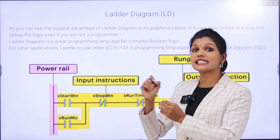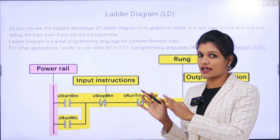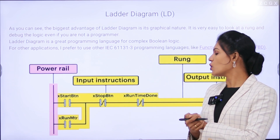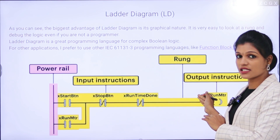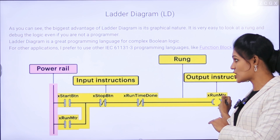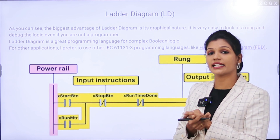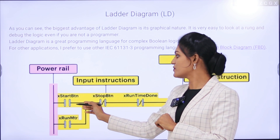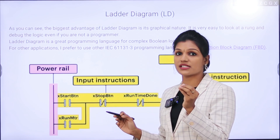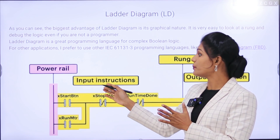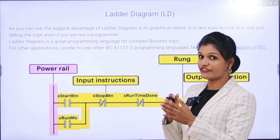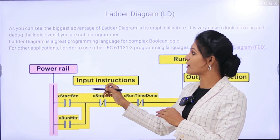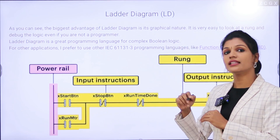Each line of code is called a rung in this program. Each rung starts with a power rail. The right side of the rung consists of output instructions and a coil, which is directly connected physically to the output on and off. The left side consists of input instructions which block or allow the flow from the power rail through the rung. If the rung is complete from the power rail to the coil, then the output will turn on.